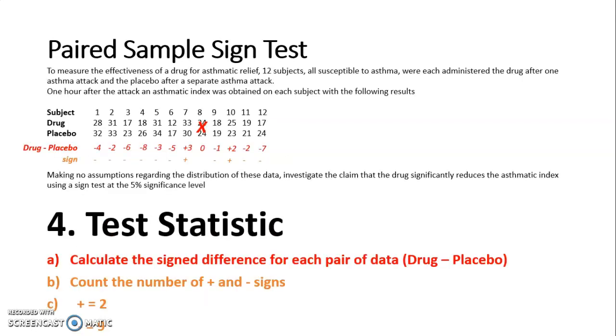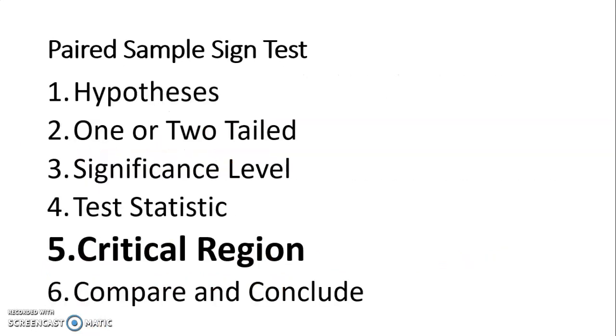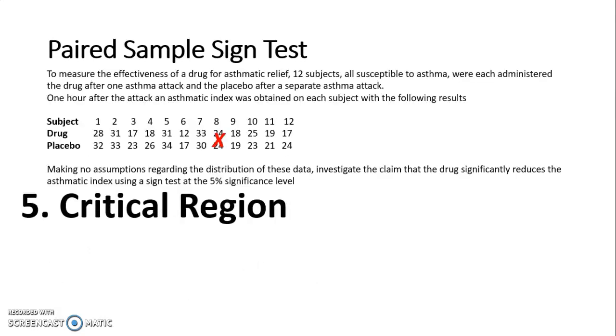So for my critical region, this is the one where I need to use my binomial distribution. I say if H0 is true, then the probability of the difference being above or below zero are equal and therefore they are a half. So I can use a binomial distribution with n as 11 because I've eliminated subject number 8 and a probability of a half because of the previous statement.